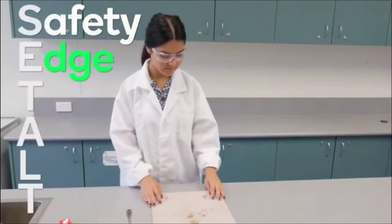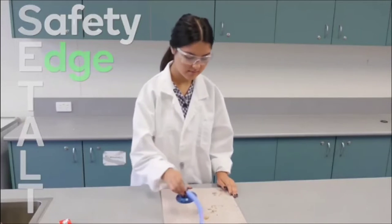E is for edge. Place the burner on a heatproof mat a safe distance from the edge of the bench.